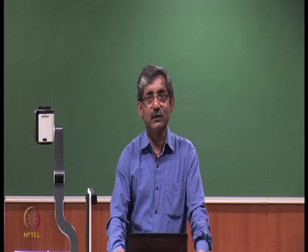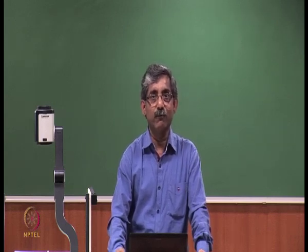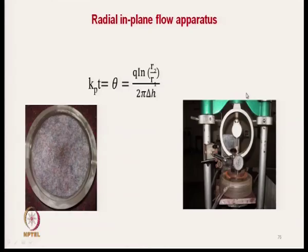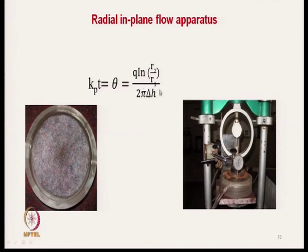Another method used is the radial in-plane flow apparatus, where the water source is at the centre of the specimen. The specimen holder is at the specimen centre and we measure the flow radially. Theta is expressed in terms of q × log(r2/r) divided by 2π multiplied by the pressure head, where r2 and r are the inner and outer diameter.